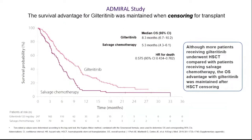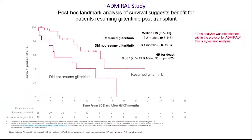To answer whether transplant affected outcome, when they censored patients at stem cell transplant time — not capturing outcomes after transplant — the overall survival was still clearly better with giltretinib compared to salvage chemotherapy, with median around 8 months versus 5 months. This is a post-hoc analysis giving us a hint about potential giltretinib benefit post-transplant. We know the Morpho trial press release suggests possibly no benefit of giltretinib maintenance, but in this post-hoc analysis, patients who resumed giltretinib post-transplant had clear benefit — 16 months versus 8.4 months.